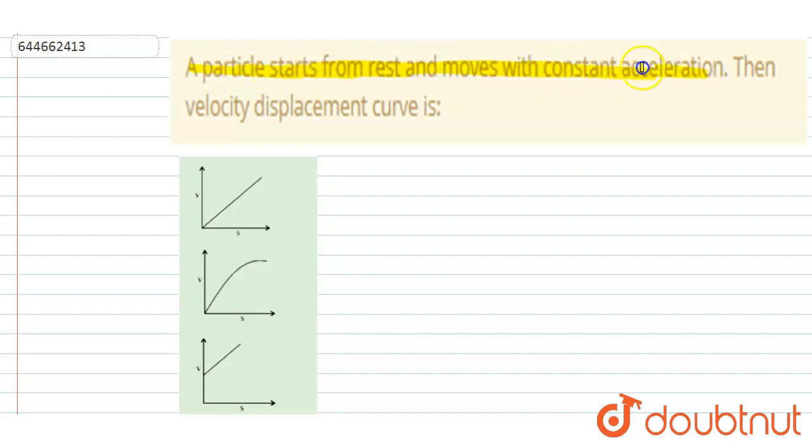rest and moves with constant acceleration. Then velocity displacement curves. So if you see, the acceleration is constant here, right? So if the acceleration is constant, we can write down the three equations of motion here. So let's just write